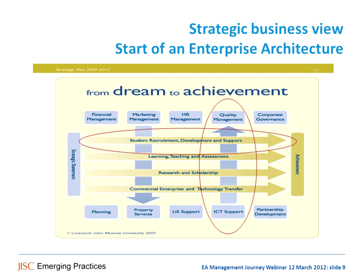We talk about starting with a view of the business. This is a very simple view of Liverpool John Moores University, which could probably describe most institutions around our table today. At the center is what it's there for: students and their life, learning, teaching and assessment, research, and different relationships with commercial partners. They identified very clearly, by thinking about the organization in this way, that they had an issue with the student experience — the student journey or life cycle — something that will be familiar to many of you.